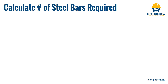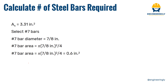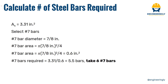The next step is to find the number of steel bars required. We select number 7 bars, which have a diameter of 7/8 inch. The area of one bar is pi times diameter squared divided by 4, giving 0.6 square inches per bar. Dividing the required area of 3.31 square inches by 0.6 gives 5.5 bars. We round up to 6 bars to achieve symmetry in the section — we cannot use half a bar. So we will use six number 7 bars.